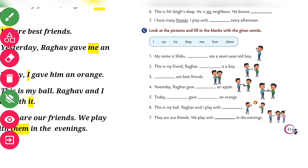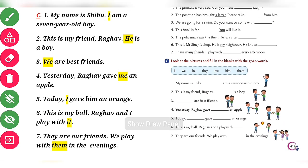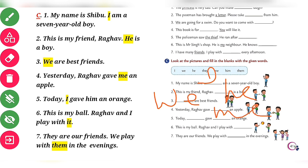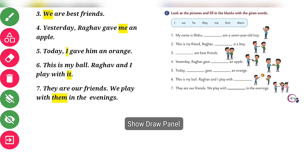Now Exercise C: look at the pictures and fill in the blanks. My name is Shibu. This is my friend Ragu. We are friends. Yesterday Ragu gave me a number. Today I gave him back. This is my ball, Ragu and I play with it.